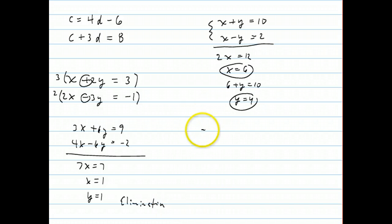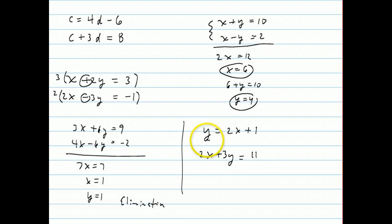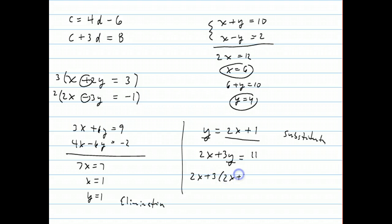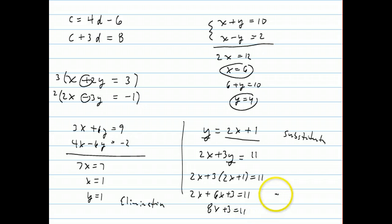Another method is substitution. For y equals 2x plus 1 and 2x plus 3y equals 11, since one equation is already solved for y, replace y in the other equation with the entire expression 2x plus 1. Distributing gives 2x plus 6x plus 3 equals 11, so 8x equals 8, x equals 1. Plug back in to get y equals 3.